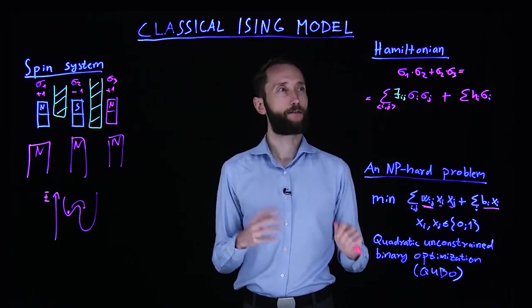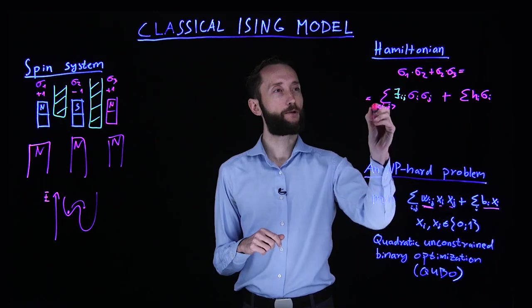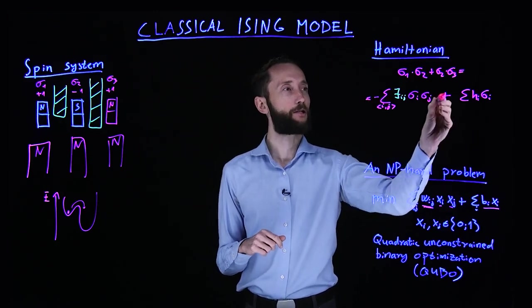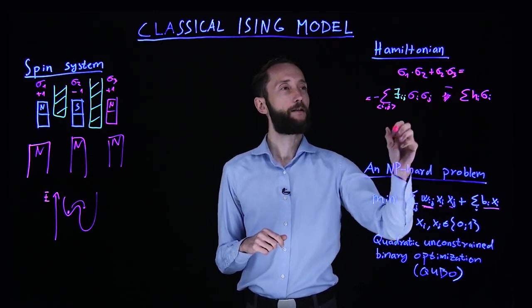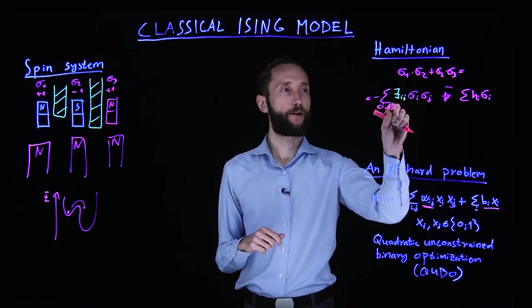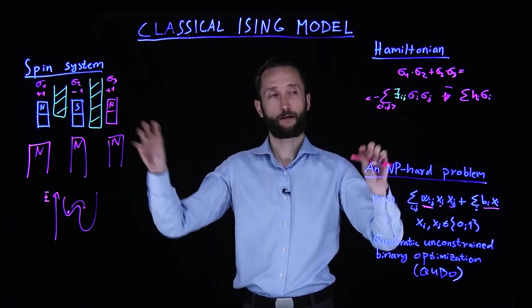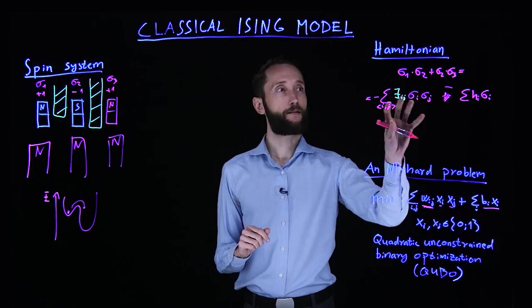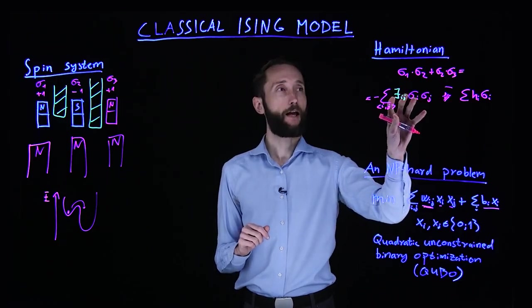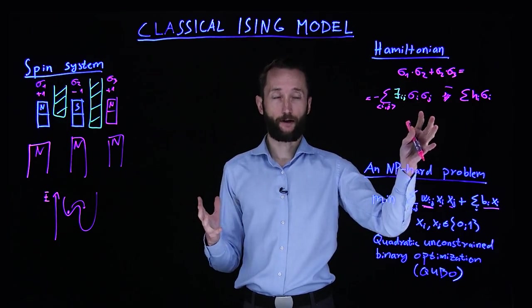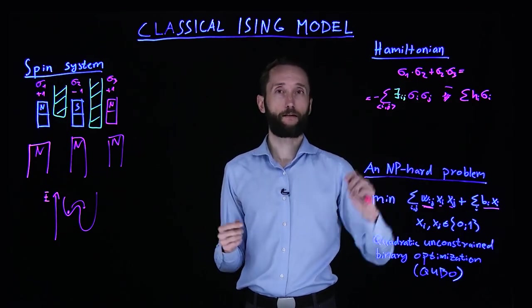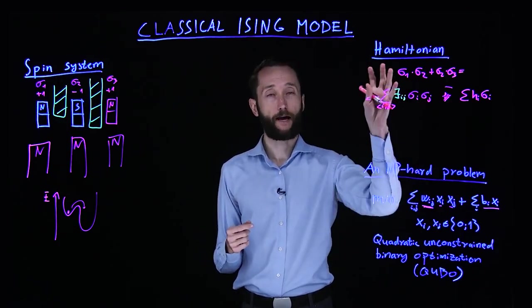And just by convention, we typically put a minus sign here and we change this into a minus sign. So the actual coupling strengths are opposite signs to what I described here. But apart from that, this describes the energy of the system and the operator or this equation that describes the energy of the system is called a Hamiltonian.